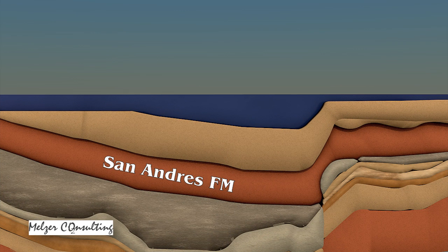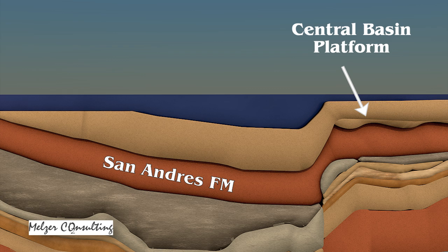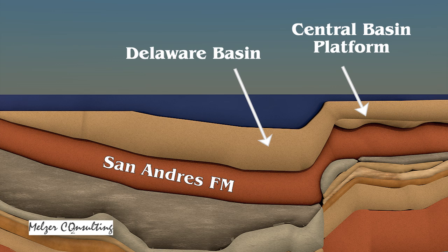On the right of that is the Central Basin Platform, which basically divided the Permian Basin into two regions. The west was the Delaware Basin region; on the east was the Midland Basin region. It was separated by this platform of carbonate rock — limestones that ultimately became mostly dolomites, calcium magnesium carbonates.